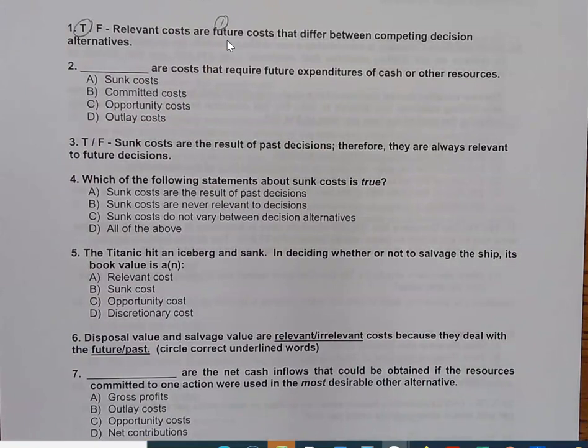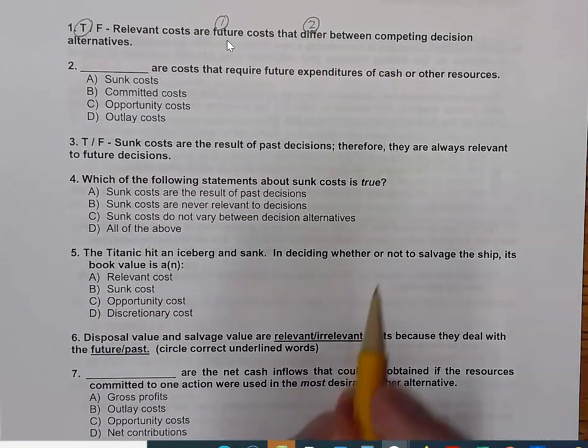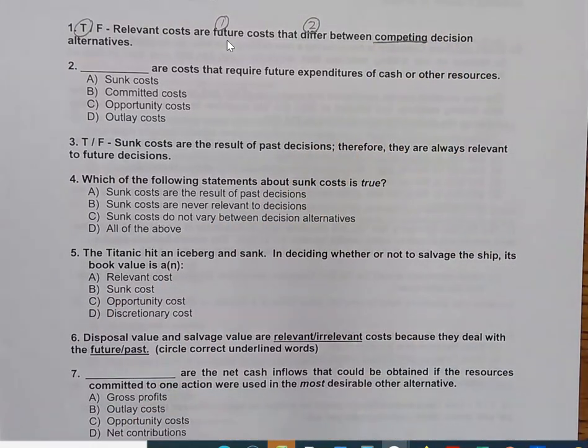It can't be anything that we've already incurred. The second thing is that there has to be a difference between competing decision alternatives. That could be scenario A to spend money on this and scenario B to spend money on something else. Or, it could be a situation where we're talking about scenario A is to spend the money and scenario B is to not spend the money. And that would be a competing alternative as well. Question number two here says, blank, are costs that require future expenditures of cash or other resources. And we've got some choices here.